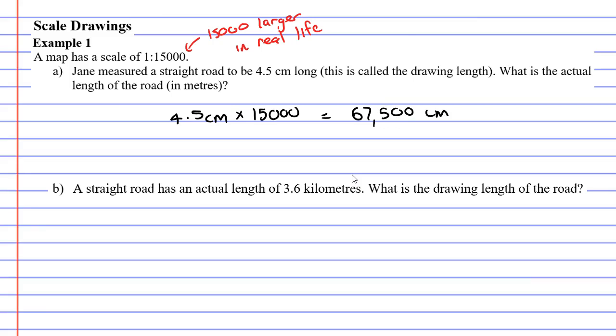67,500, and that is in centimeters. Because our measurement was in centimeters, our solution is also in centimeters. They want us to give it in meters. If we want to give it in meters, all we need to do is take off two zeros, so we get 675 meters. Our road in real life is 675 meters long.